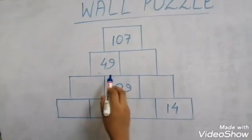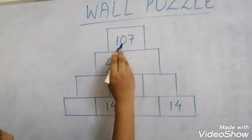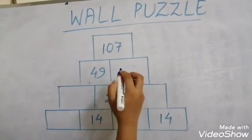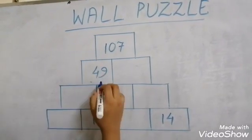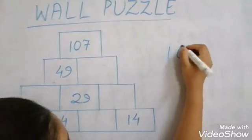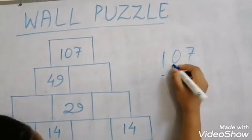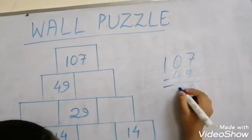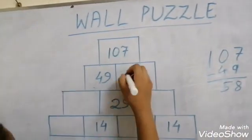49 plus dash is equal to 107. So to get the number here we should subtract 49 from 107. So 107 minus 49 is equal to 58. So we will write here 58.